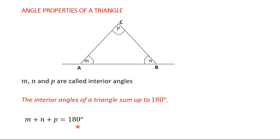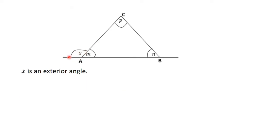Let's consider another property of a triangle. In this slide, we extend line A to create another angle. We are going to call this angle X. X is an exterior angle, while M, P, and N are called interior angles. Now, P and N are called the interior opposite angles of X.